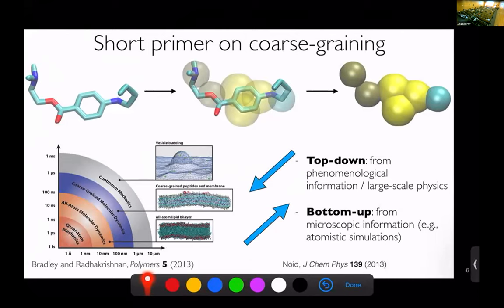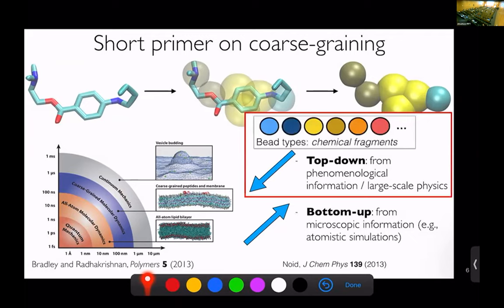Jenny talked about the bottom-up way, which is from microscopic information. From this multi-scale plot, you start from the bottom and you go up, starting from atomistic simulations and then doing something like force matching. I'm going to be talking about top-down models, which go the other way, which go down. They typically start from phenomenological information or large-scale physics, and then you try to encode that information into your coarse-grained potentials.